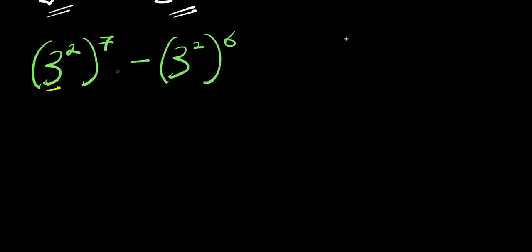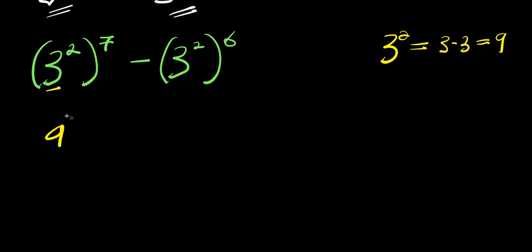From here, three to the power two equals three times three, which is nine. So we have nine to the power seven, minus nine to the power six.